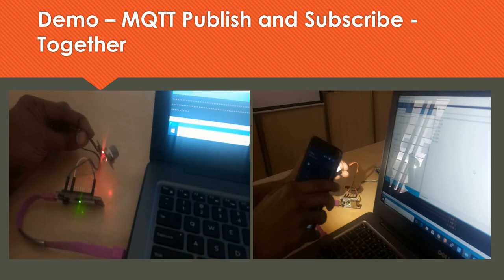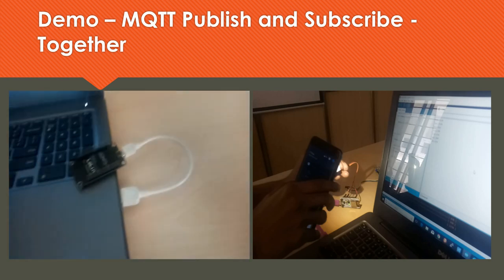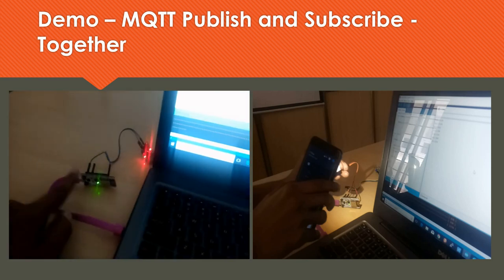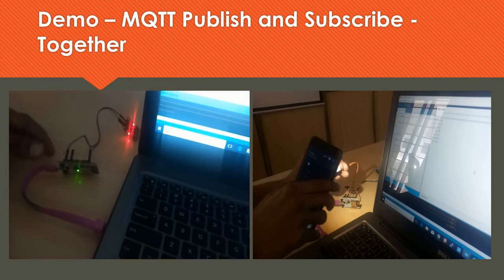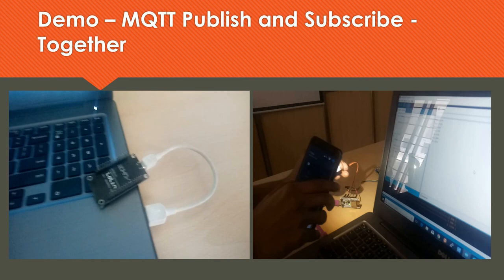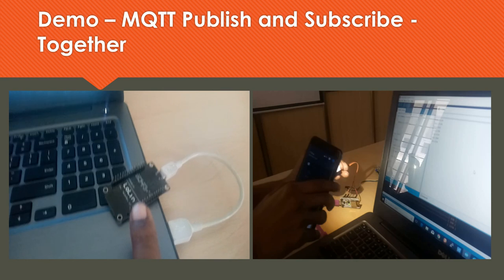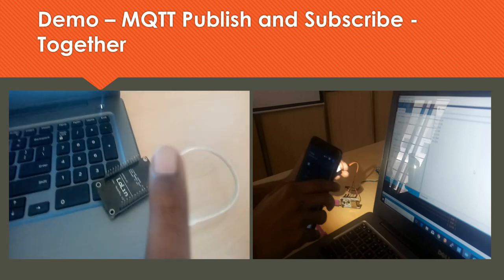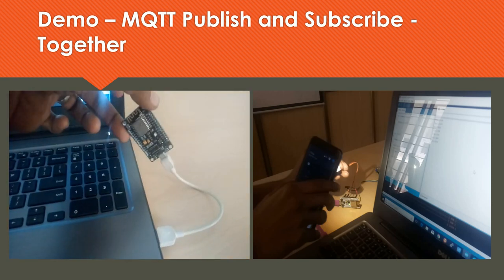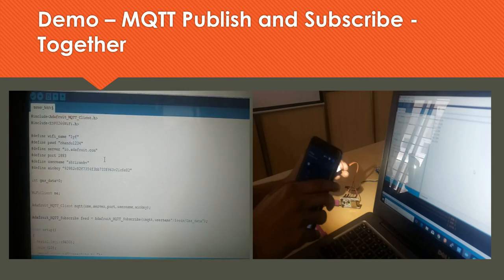On one side the publisher is sending data, and on another side I have got another NodeMCU which is going to subscribe to that data. This sensor sends data to NodeMCU one which publishes it onto the cloud, and the second NodeMCU subscribes to it and acts as a subscriber. I am going to prove the concept of subscription and how data is retrieved from the cloud using a simple serial monitor. You can see that I have no sensors connected here — it is just a NodeMCU powered up.